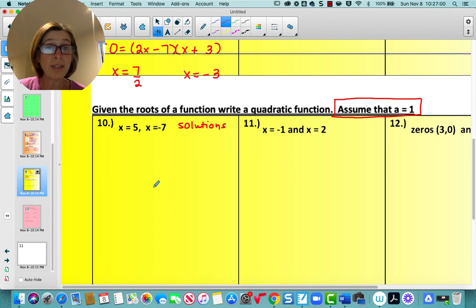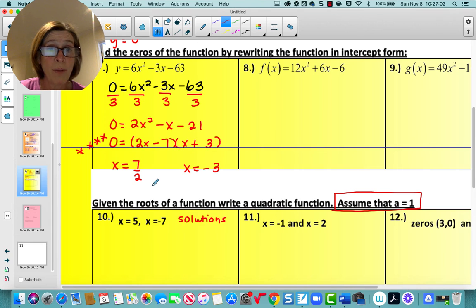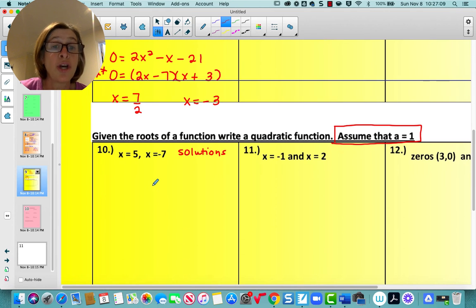So if I'm working backwards, look at what we did. We factored, we took those factors, set them equal to zero, we got their roots. So to work backwards, we need to write these as factors. So to write them as factors, we write them as their opposite.